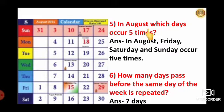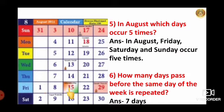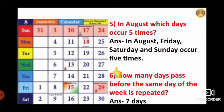Fifth question: in August, which days occur 5 times? Sunday occurs 5 times — 1, 2, 3, 4, 5. Also Friday occurs 5 times — 1, 2, 3, 4, 5. And Saturday also — 1, 2, 3, 4, 5. So in August, Friday, Saturday, and Sunday occur 5 times.